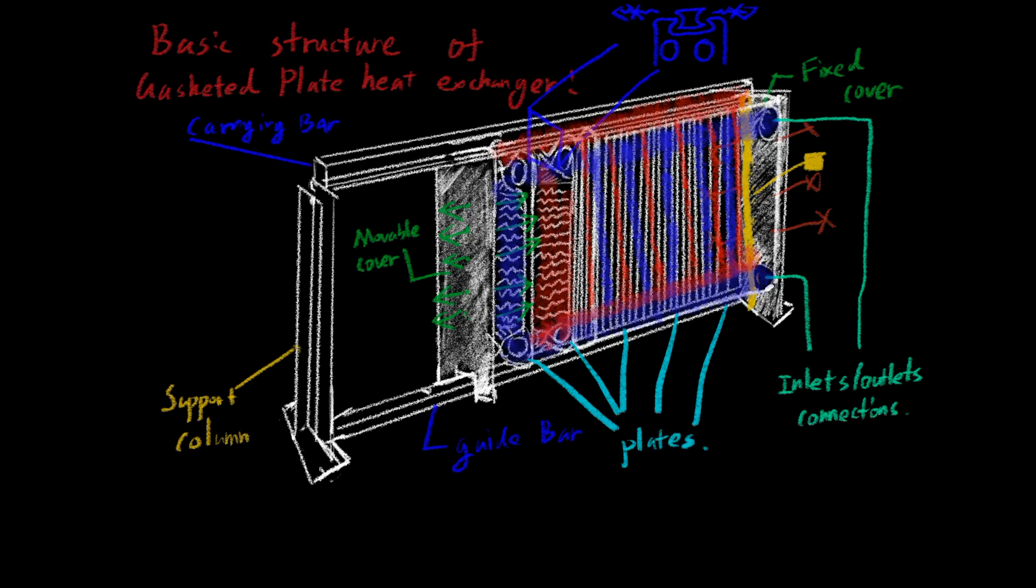Lastly, we have plates, which are very important because heat exchanging is done through hot water and cold water traveling through adjacent plates. This is the basic structure of a gasketed plate heat exchanger.